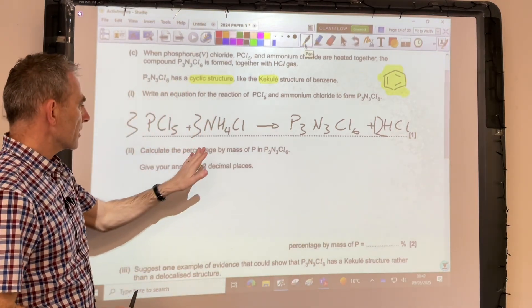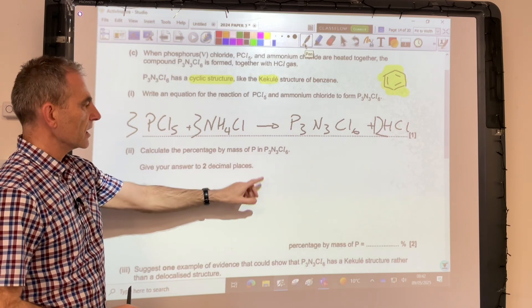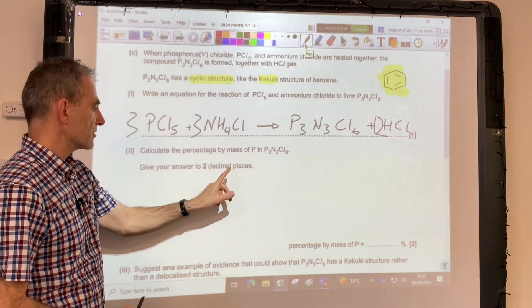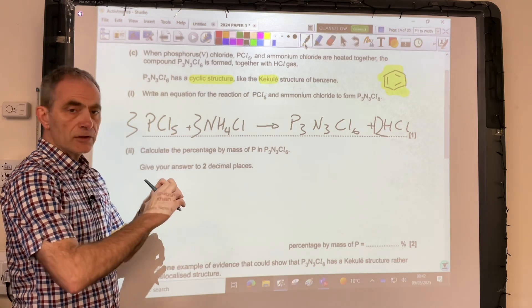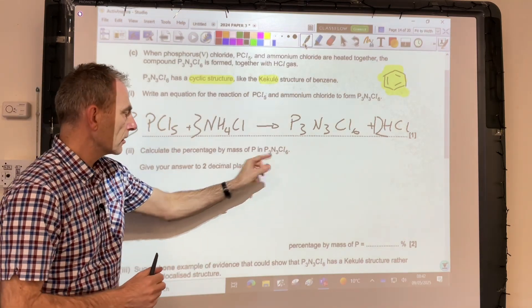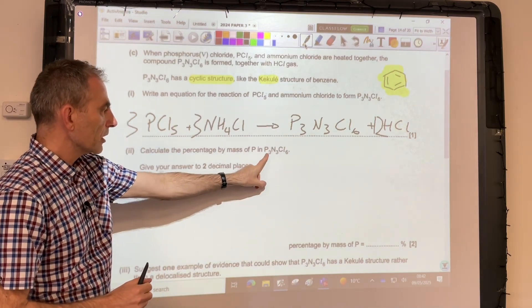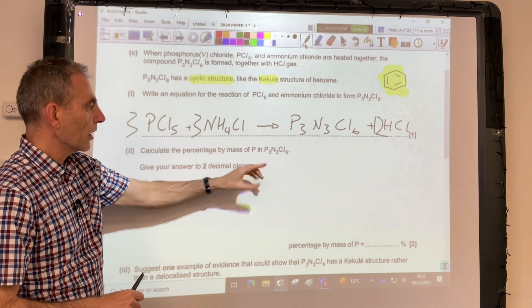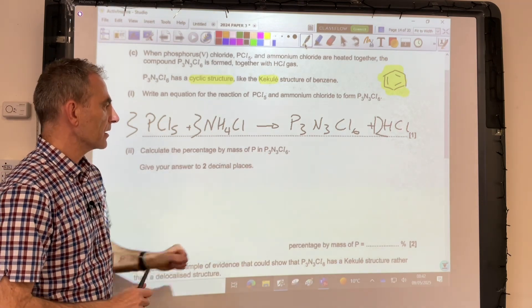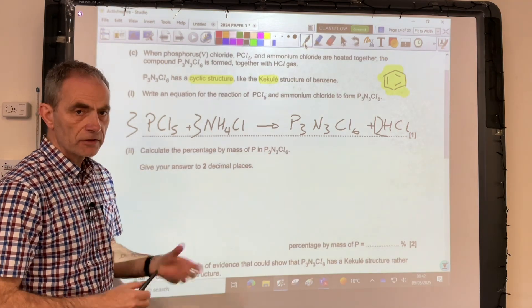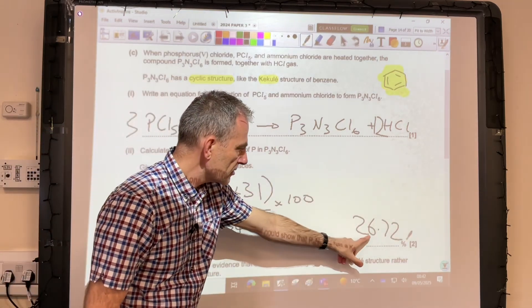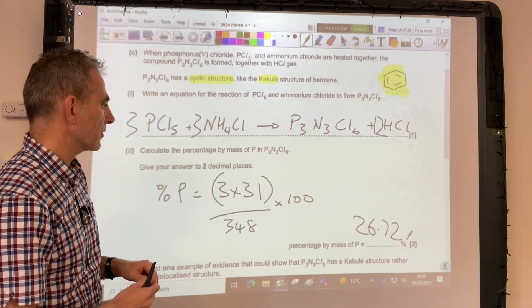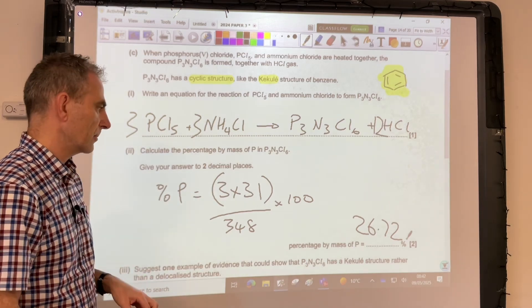Moving on to the next part, so we've got to calculate the percentage biomass of phosphorus in P3N3Cl6, two decimal places for our final answer. So we need to know the total MR of the molecule, and there are three Ps in it. So the MR of three Ps divided by the total MR times 100 gives us our percentage. So there's the numbers there, and the final answer is 26.72%. Remember, two decimal places needed.